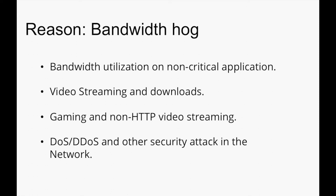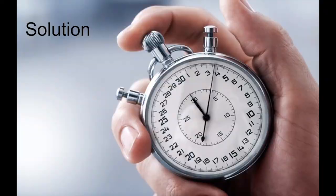Bandwidth hog issues can be created due to many reasons — accessing non-critical applications over critical ones, which creates bandwidth allocation problems. It can also be caused by video streaming and downloads, gaming and non-HTTP video streaming, or DoS and DDoS attacks and other security attacks on the network, which must be analyzed and fixed immediately.